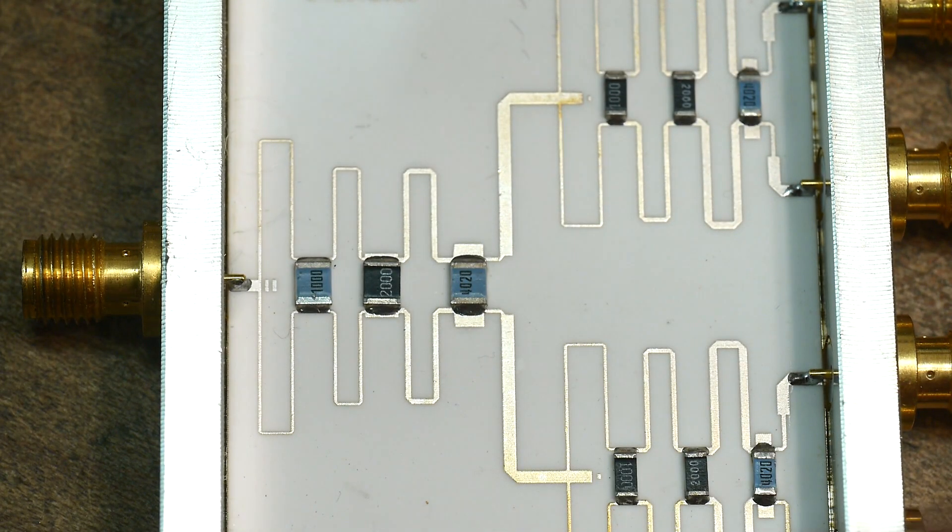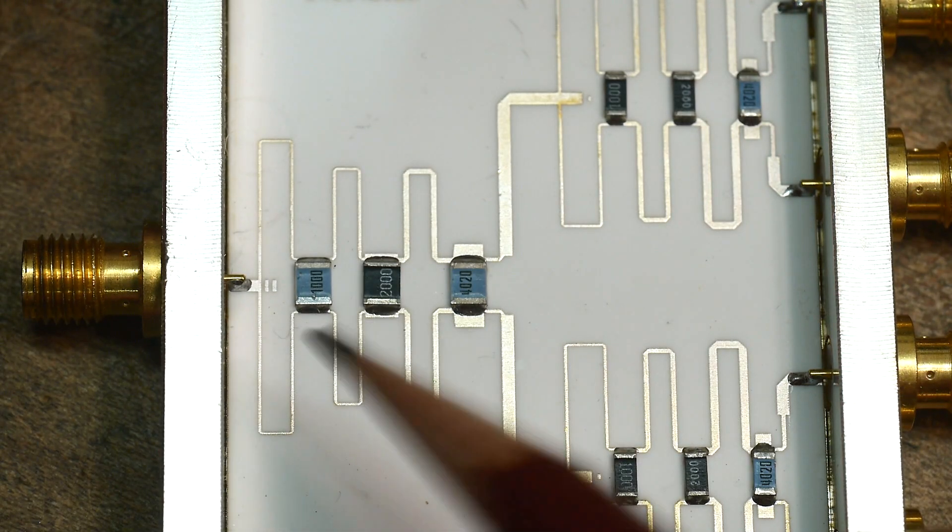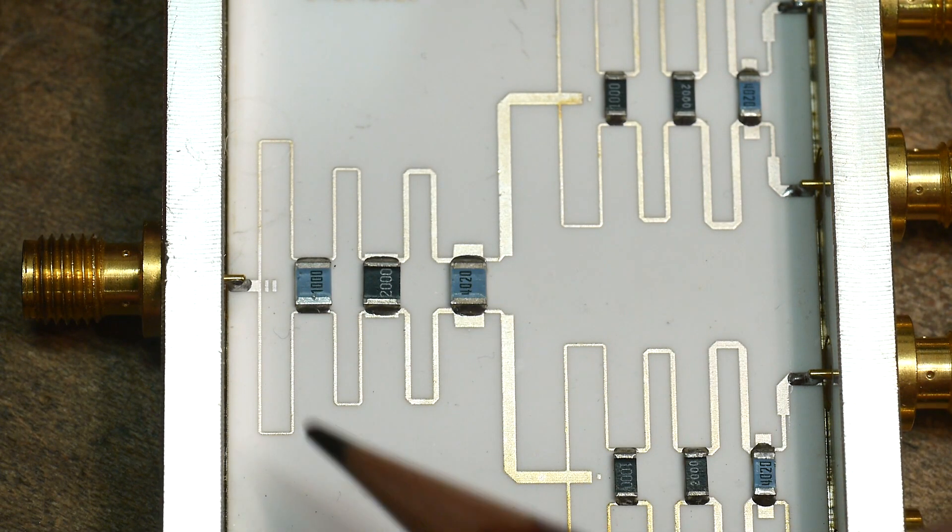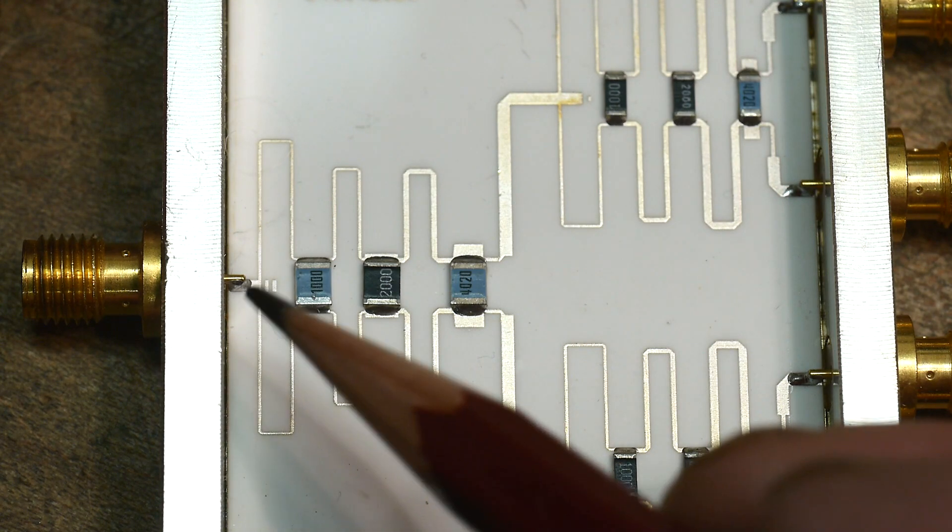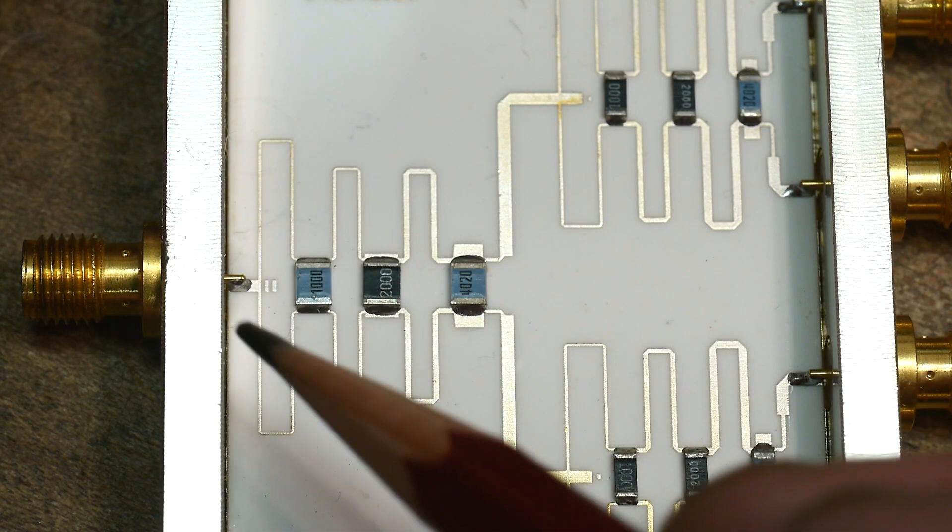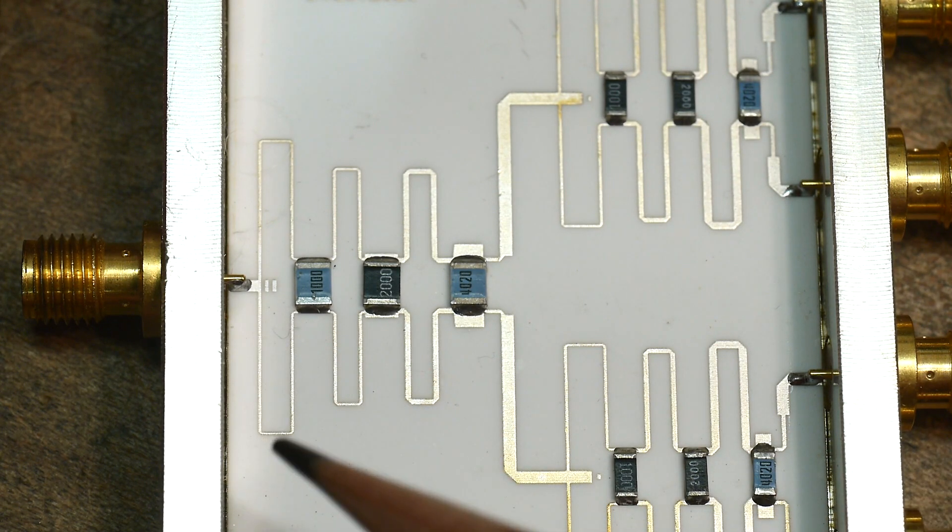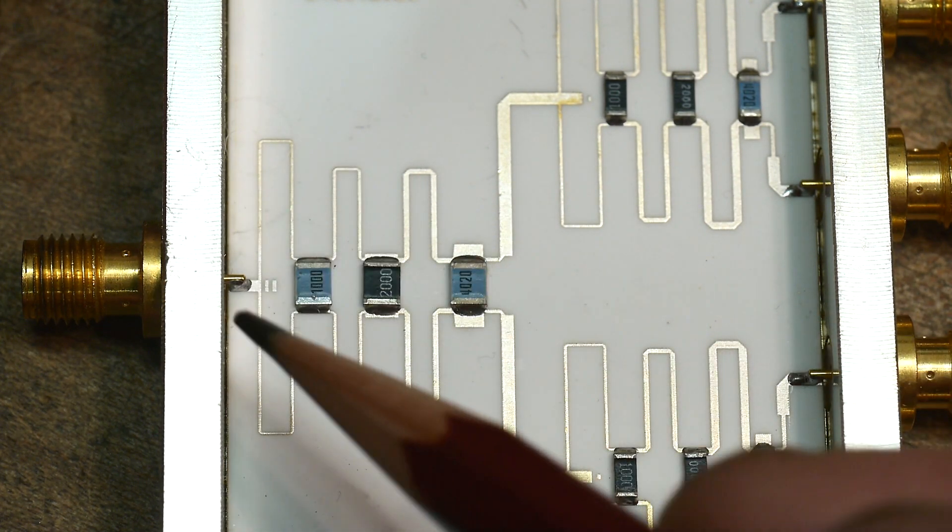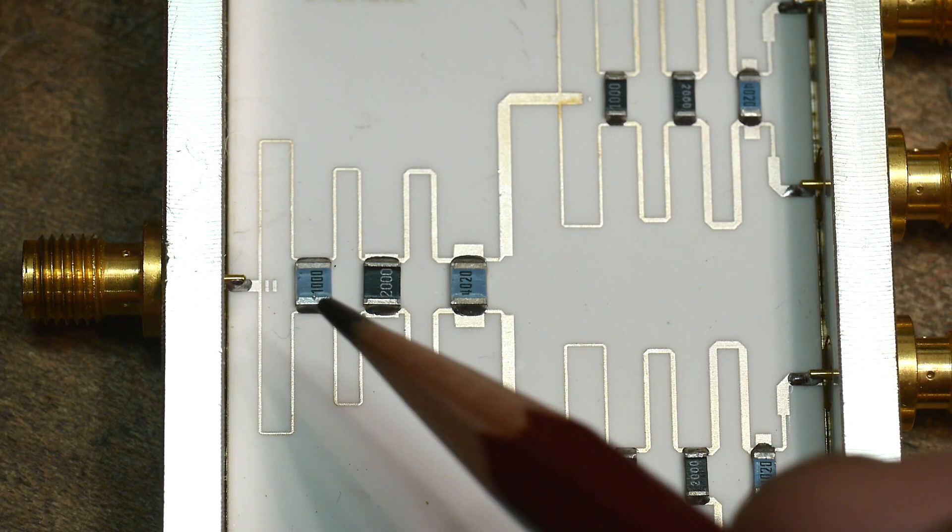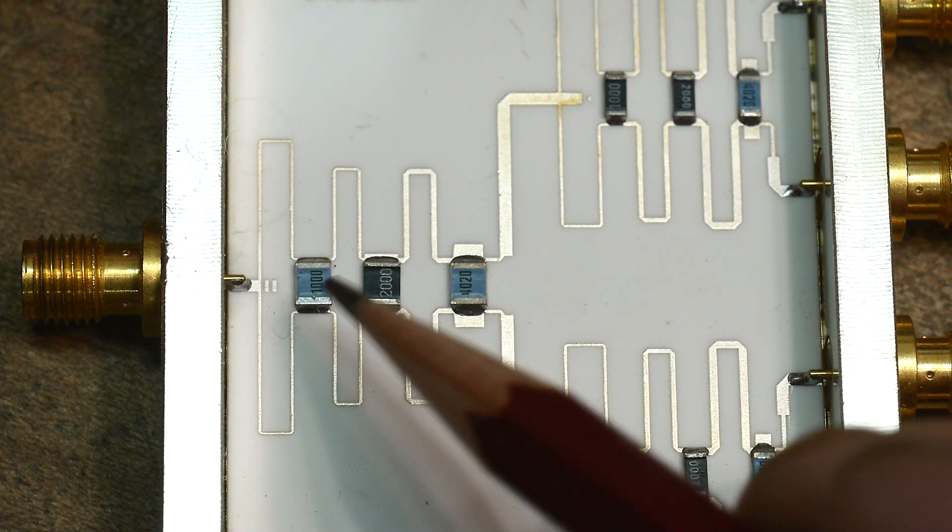And so how does this work? Well, if we take a look at the input, the first thing it does is it hits this little path here and have a duplicate path over here. So half of it's going this way and half of it's going this way. So these are obviously like little inductors.